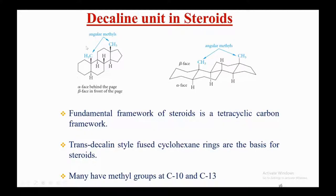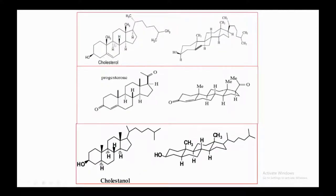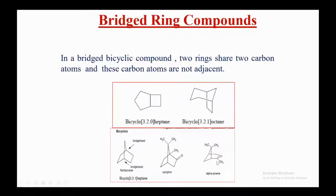Decalin units are fundamental to steroids. The angular methyls are shown on the bold alpha-phase (behind the page) and beta-phase (in front of the page). The fundamental framework of steroids is a tetracyclic carbon framework with trans-decalin-style fused cyclohexane rings. Many steroids have methyl groups at C10 and C13. Examples shown include cholesterol and progesterone in their chair conformations.